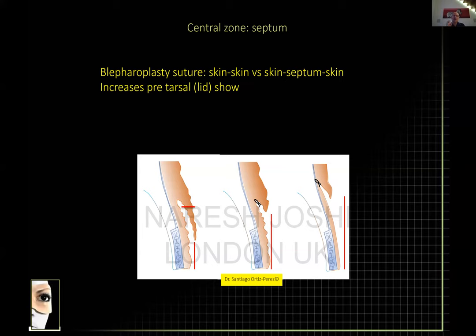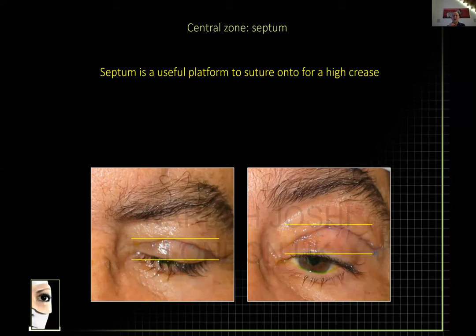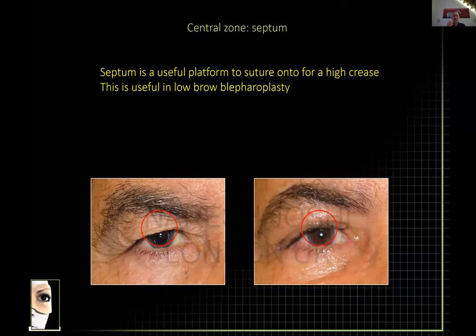Because you've pulled up the crease, you will deliver a larger lid show. Here you can see that when looking straight on, the sutures sit at about eight millimeters, but if you pull the brow up the crease has gone all the way up to maybe twelve millimeters — giving you the ability to deliver a lid show in the presence of a low brow.